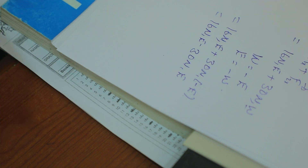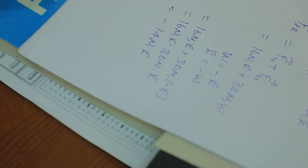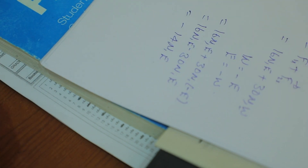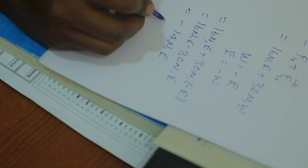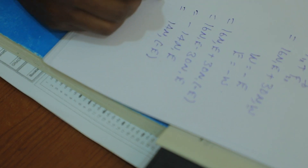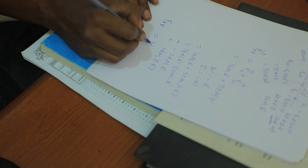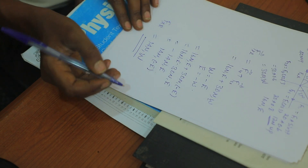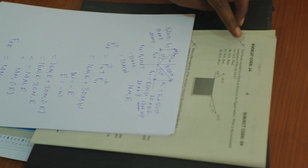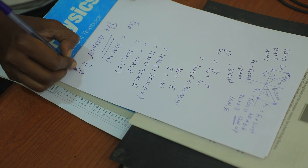Looking at the east component, 16 newton east. If the result is negative, that means the direction is west. The horizontal component of the resultant is east. The direction is east, so the answer is A.